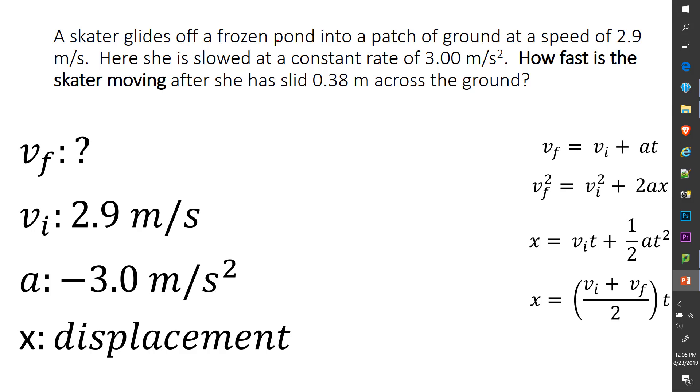A skater is gliding off a frozen pond into a patch of ground at a speed of 2.9 meters per second. Here, she slowed at a constant rate of, so watch out for that, slowed at a constant rate of 3.0 meters per second squared. How fast was the skater moving after she slid 0.38 meters across the ground? So it's asking you how fast was she moving after she slid that? It's asking you for VF.